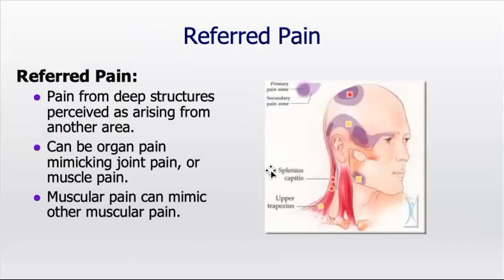Referred pain is very interesting and there's lots of research in this area, though still lots of space to expand our understanding. Referred pain is when a painful stimulus is occurring in one area but is perceived in another. A great example is cervicogenic headaches, where headaches are actually occurring due to pain in the neck. There's also visceral referral — for example, issues in the gallbladder can cause referral to the shoulder.